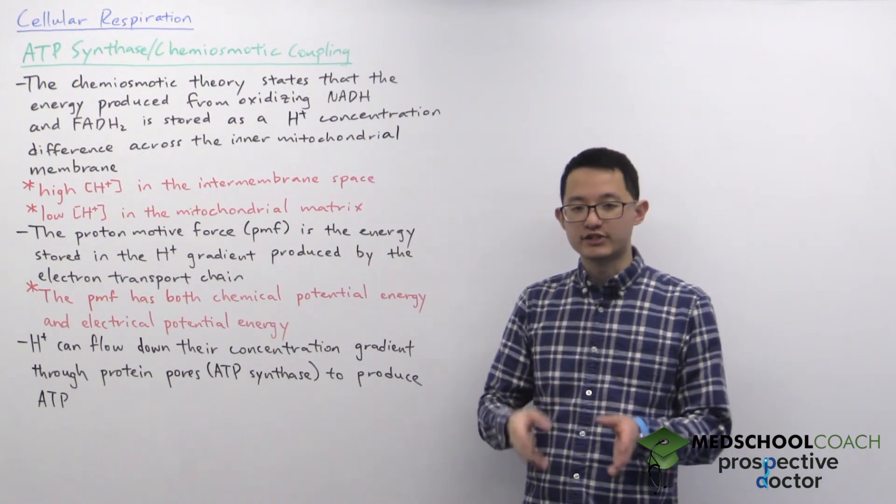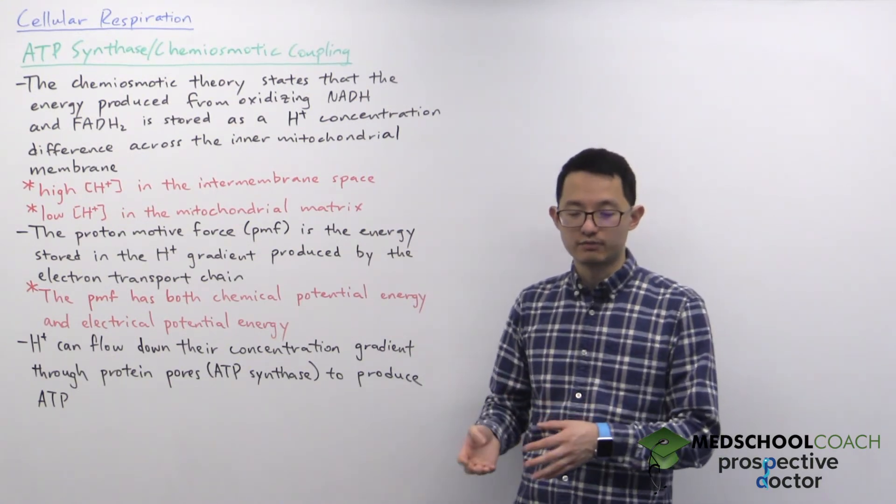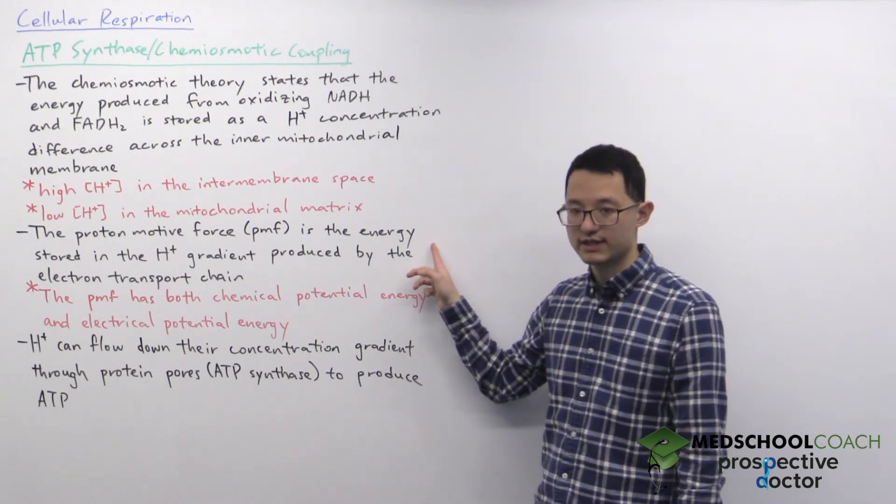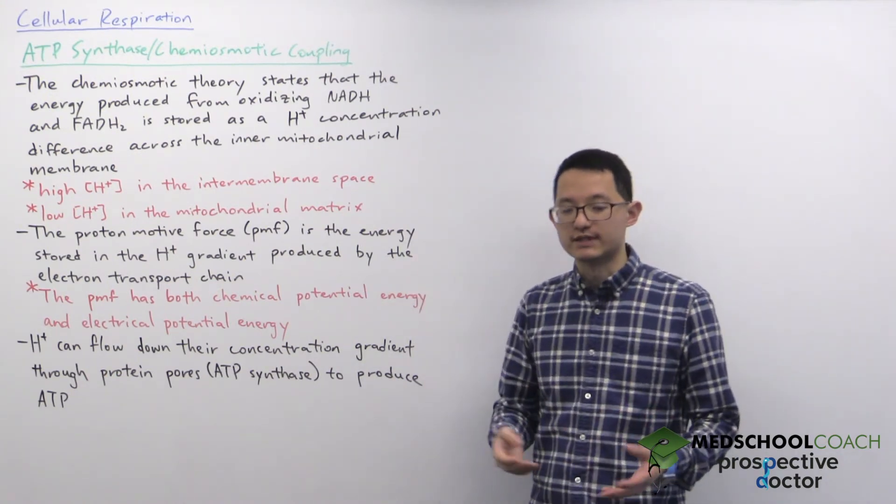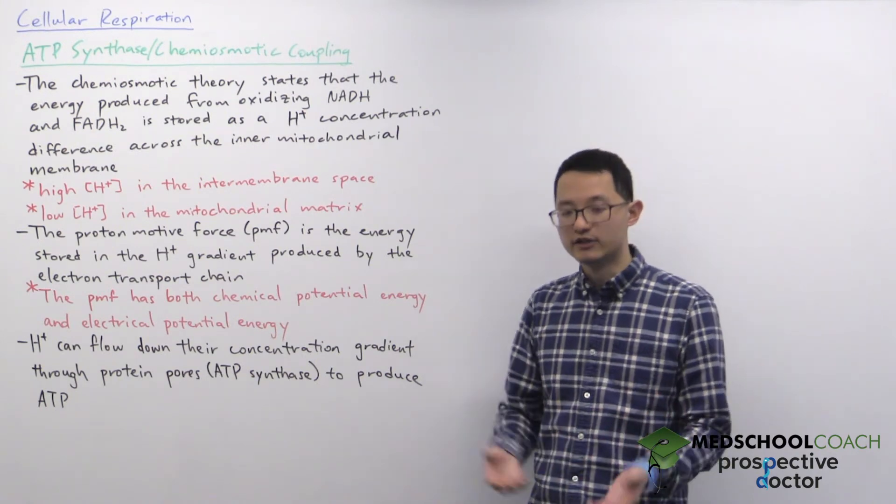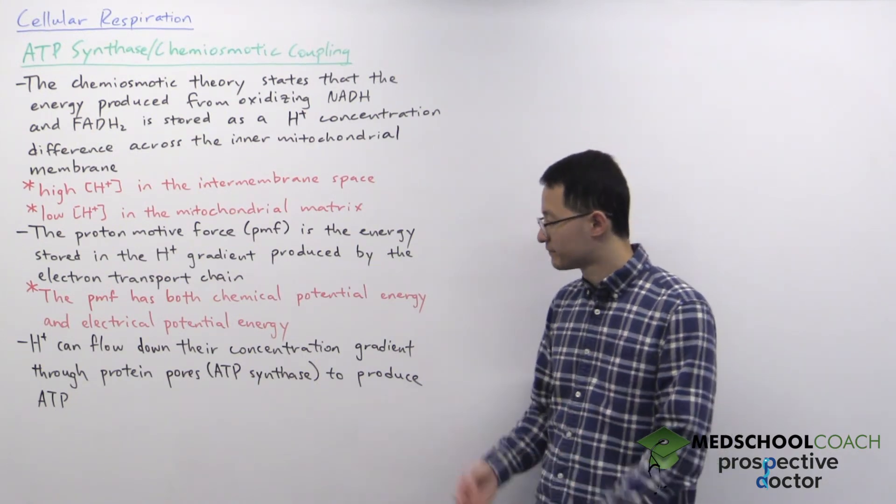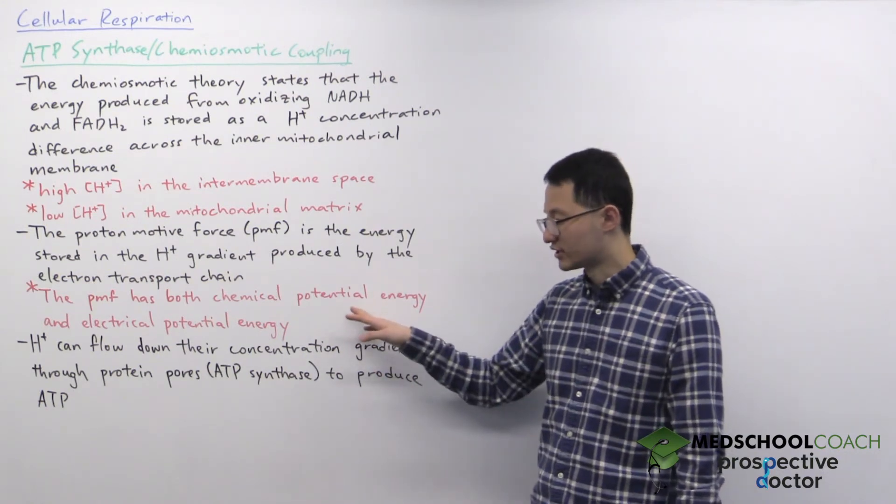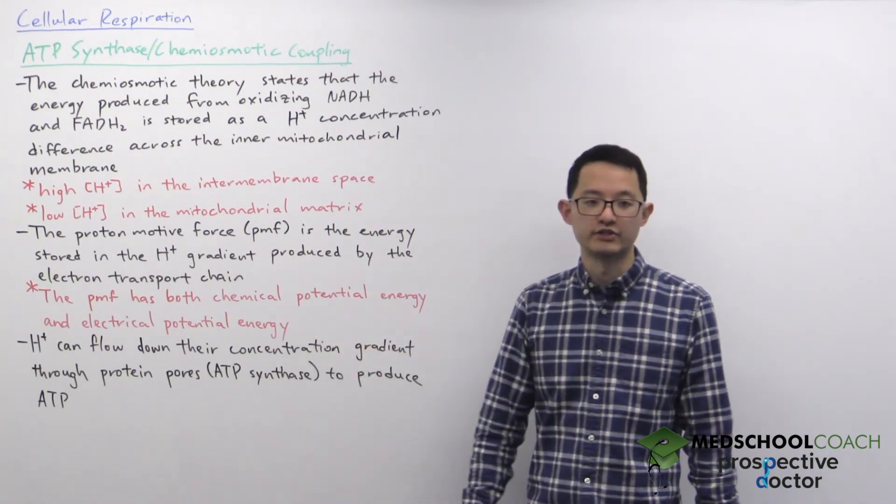Now this energy stored in this proton concentration difference is sometimes also called the proton motive force. So the proton motive force is sometimes referred to as what is being used to produce ATP. And it's important to note that this proton motive force has both chemical potential energy and electrical potential energy.